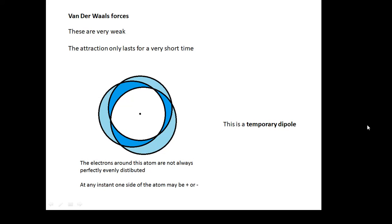The first type of force is called van der Waals forces, and they are very weak. Van der Waals or London forces is another name.